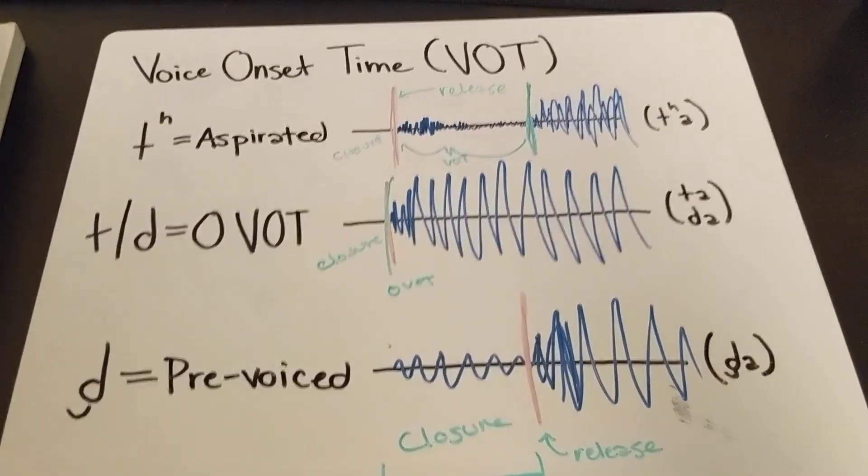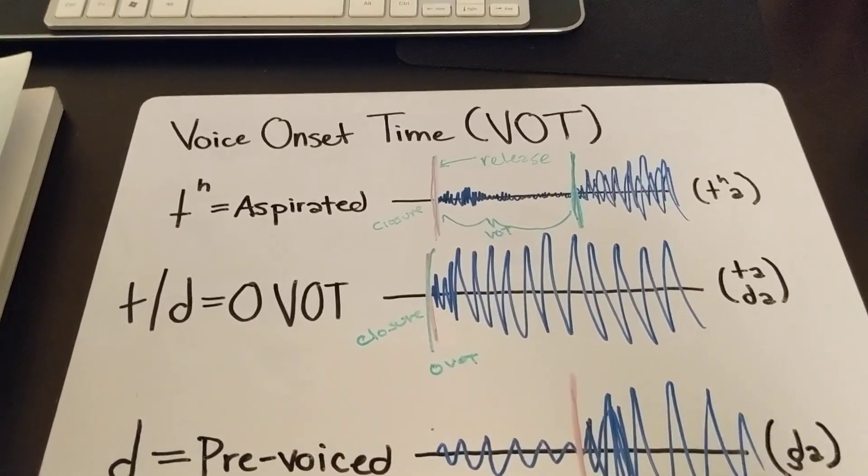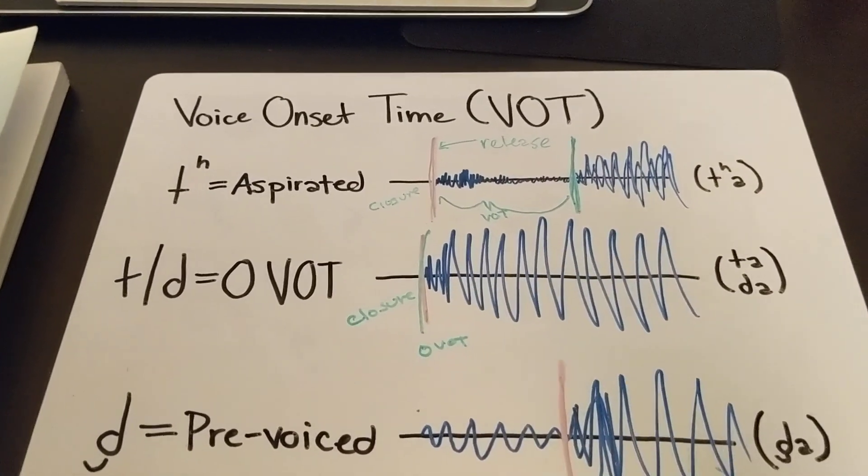And a zero VOT is sort of, it's usually a D, but it can be a T depending on the language and how that language is treating it.